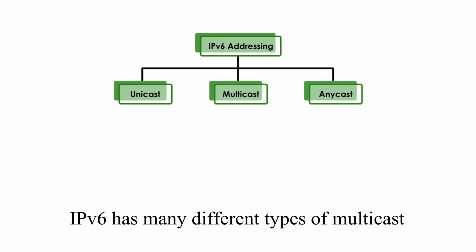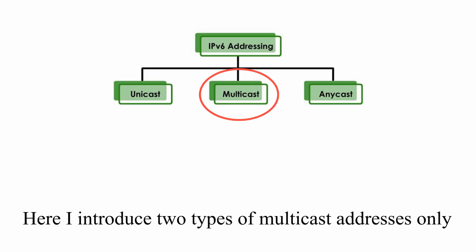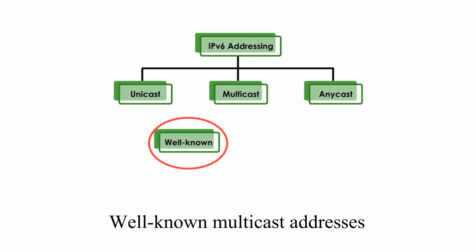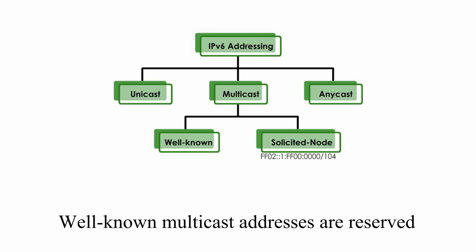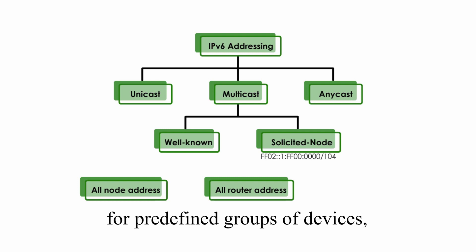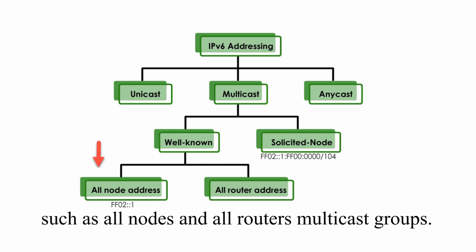IPv6 has many different types of multicast addresses for different purposes. Here, I introduce only two types of multicast addresses: well-known multicast addresses and solicited-node addresses. Well-known multicast addresses are reserved for predefined groups of devices, such as all nodes and all routers multicast groups.